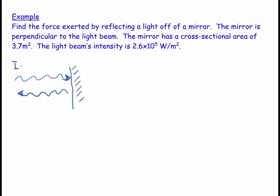We have the intensity of light is equal to 2.6 times 10 to the 5 watts per square meter, and we can say the area of the mirror.